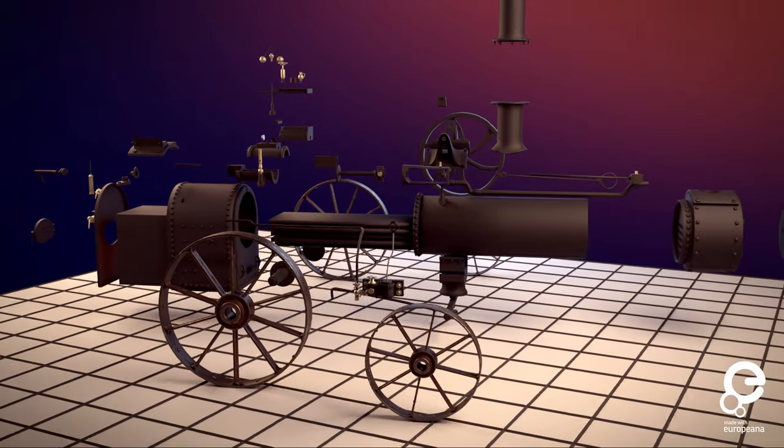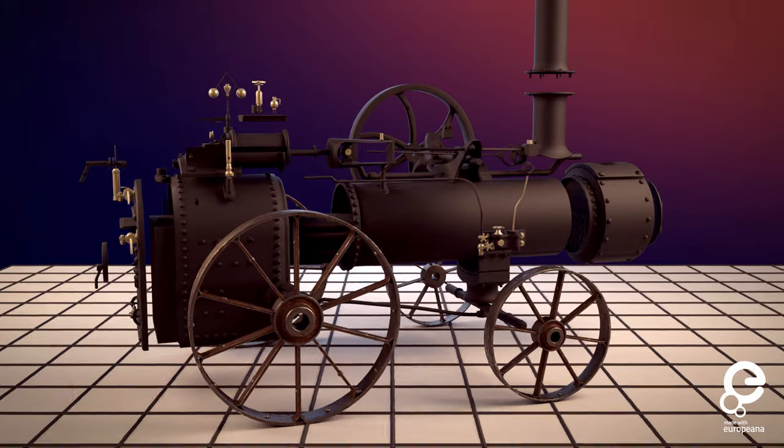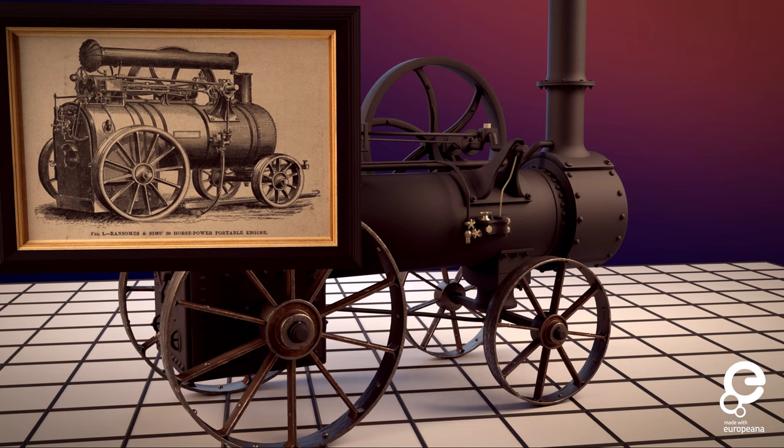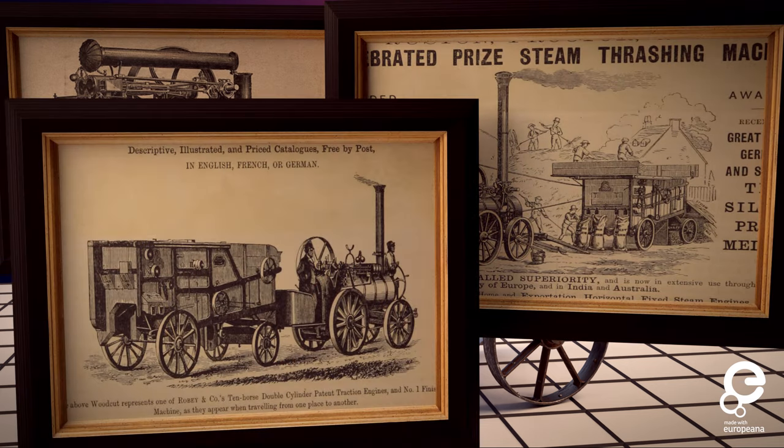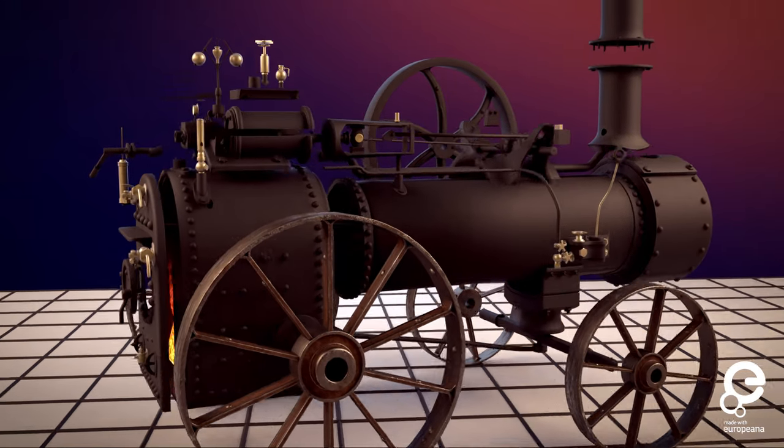Let's begin by exploring this traction engine, manufactured by the English company Ransom, Sims, and Jefferies. It was basically an early tractor used for plowing fields, threshing wheat, powering machinery, and hauling heavy loads, and its design is essentially a smaller version of a locomotive's steam engine. Let's take apart this traction engine and look inside!